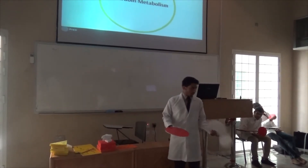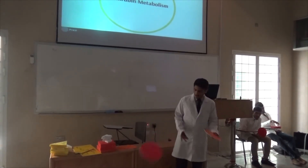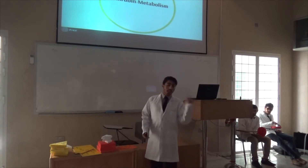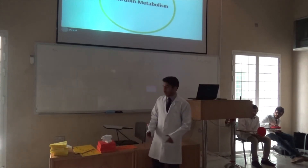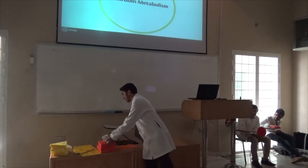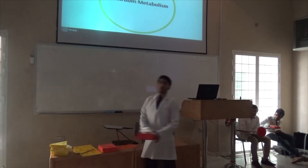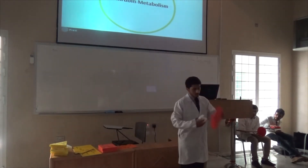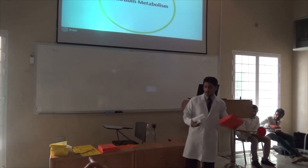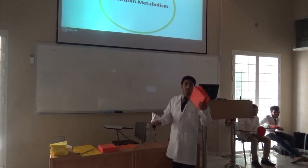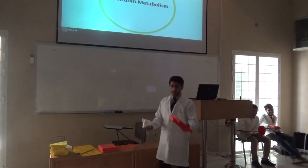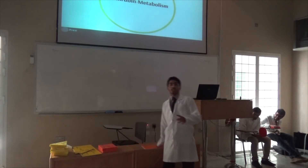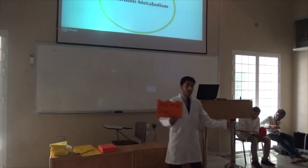Here we have one heme and one globin. Then the degradation of the heme will produce bilirubin and iron. This is the bilirubin, this is the iron. When the bilirubin is produced along with the iron, it needs an enzyme. That enzyme is the heme oxygenase.